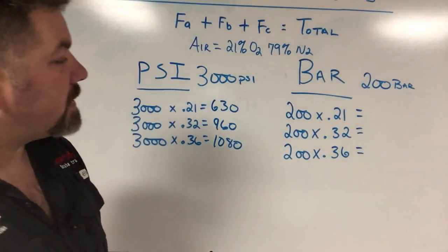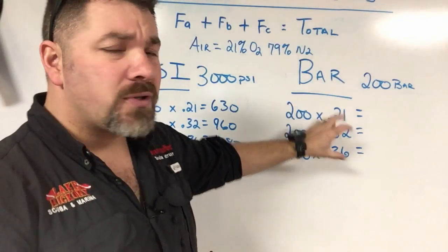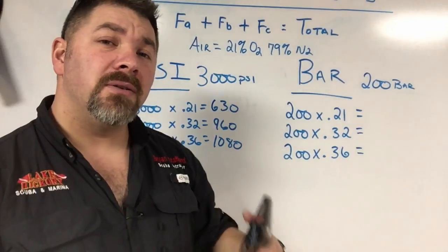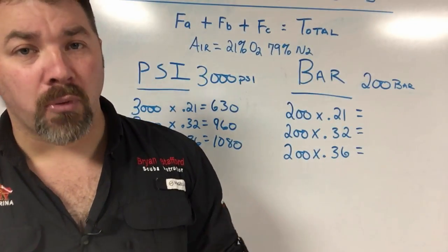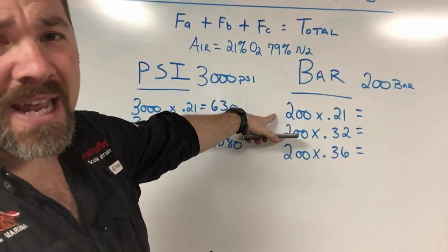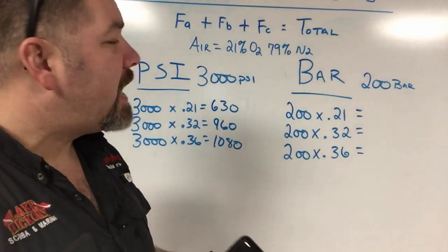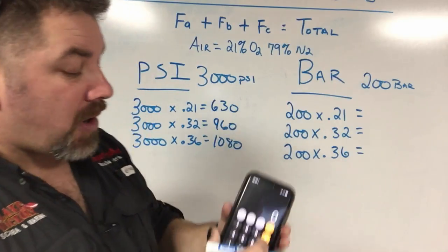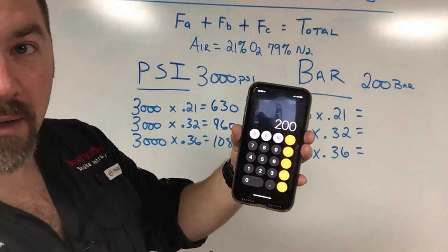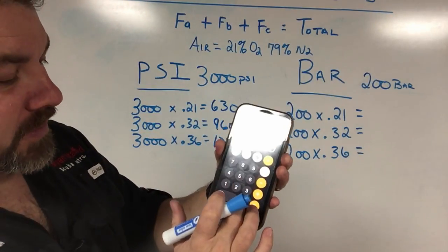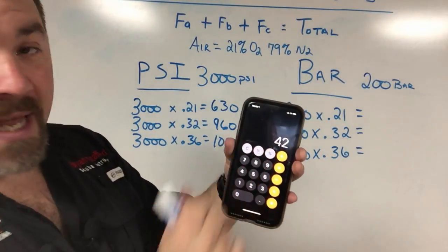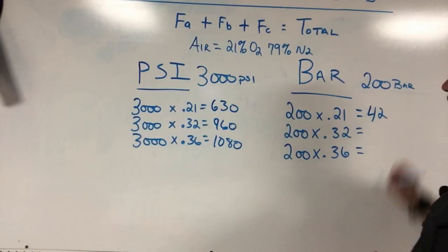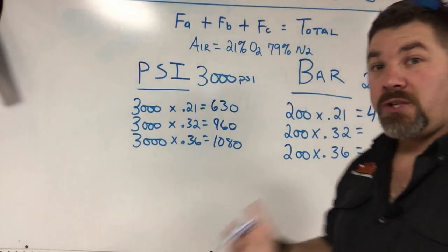If we jump to the metric system, it's the exact same process except we're dealing with bar. If I had a 200 bar cylinder with standard breathing gas at 21% O2, I just take 200 times 0.21, which gives me 42 bar. That tells me 42 bar of the 200 bar cylinder is oxygen.